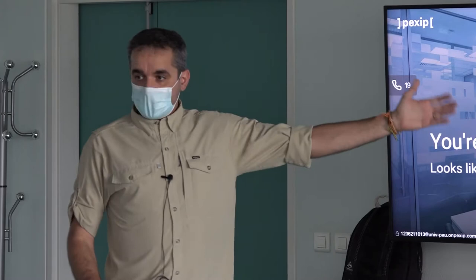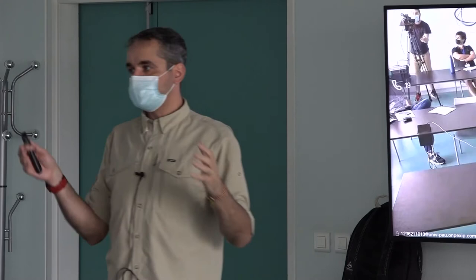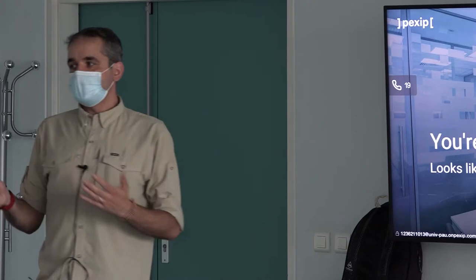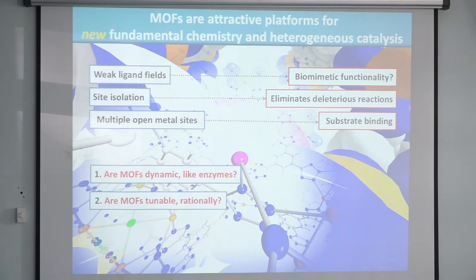Enzymes are not static — they move, they have dynamic motions, and often those motions give rise to selectivity. For MOFs, most characterization is done by X-ray diffraction, which gives you an average over the collection time but tells you almost nothing about the dynamics of that structure. As for tunability, there are hundreds of thousands of MOFs and people say it's rational by design — but that's not really true because all self-assembly processes are empirical; you can't decide a priori what structure you'll have.